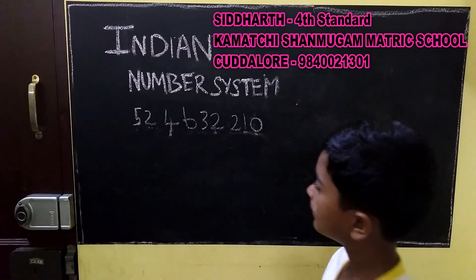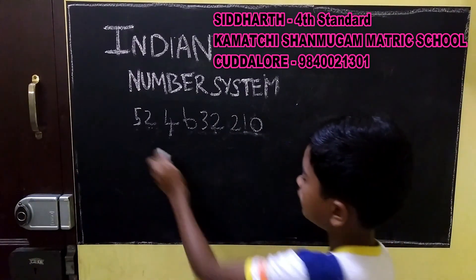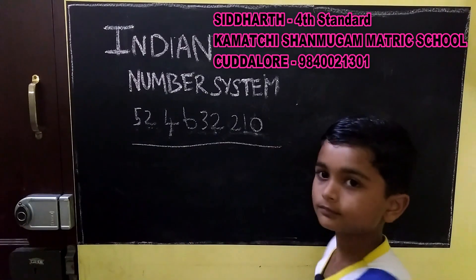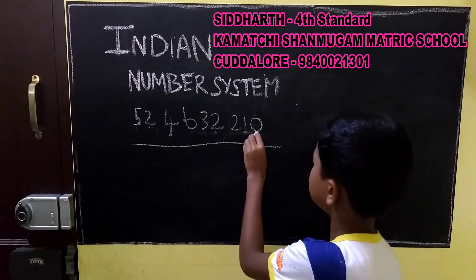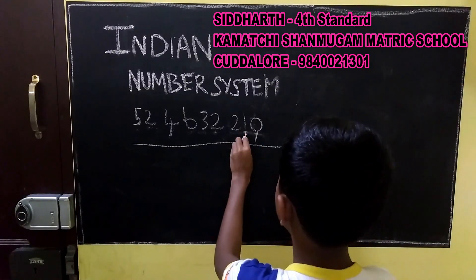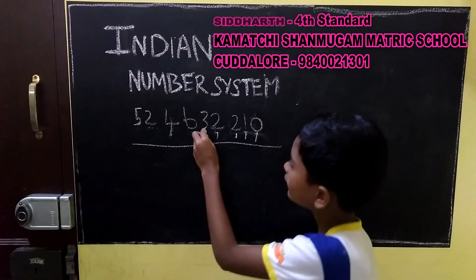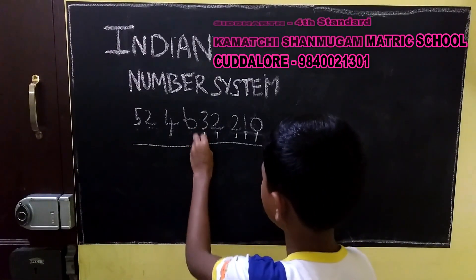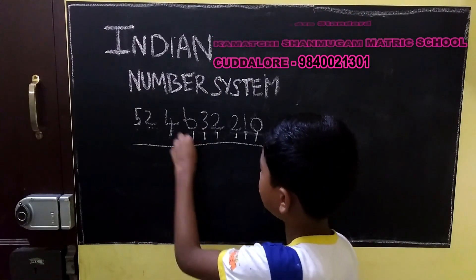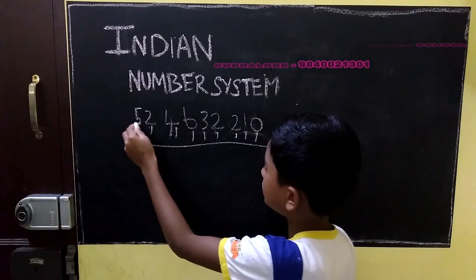In Indian number system, we take a large number. Then we take this as a unit place, tens place, hundreds place, thousands place, ten thousands place, lakh place, ten lakh place, crore place, ten crore place.